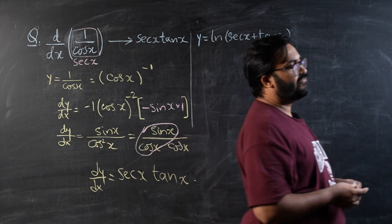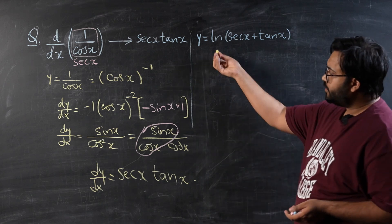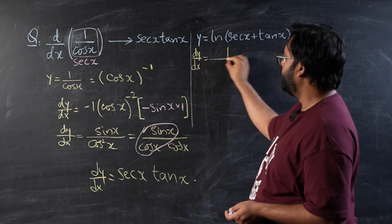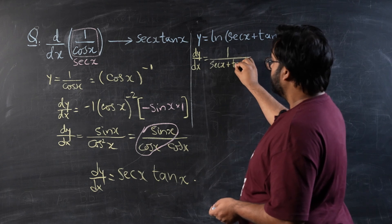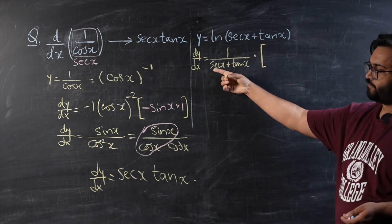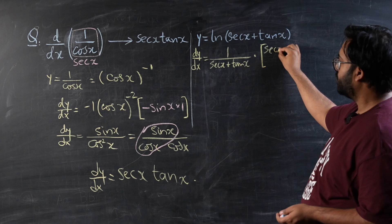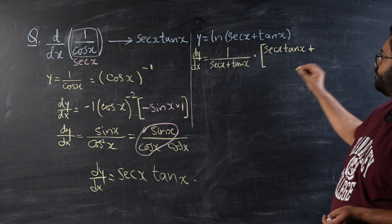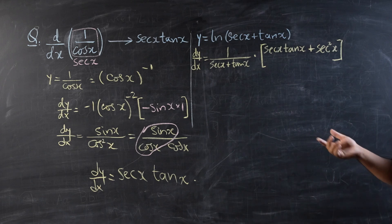The first part also requires us to differentiate the expression ln(sec x + tan x) and show that its derivative equals sec x. So dy/dx equals 1 over (sec x + tan x), multiplied by the differentiation of the bracket. The derivative of sec x is sec x tan x, and the derivative of tan x is sec² x.